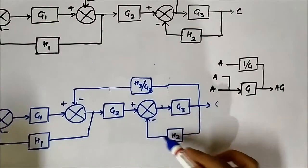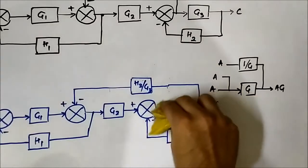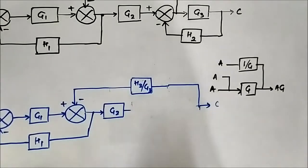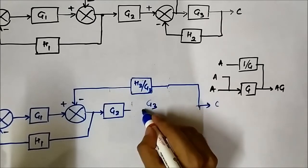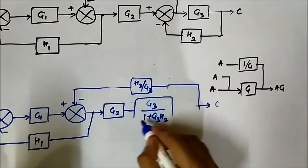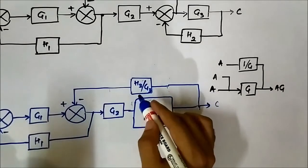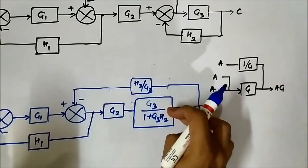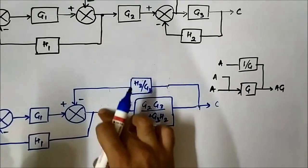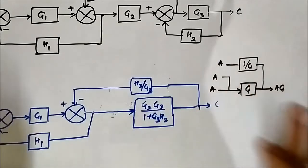This is a negative feedback path. It will become G3 / (1 + G3·H2). So directly we apply that formula: G3 / (1 + G3·H2). Again, these two blocks are in cascade with G2, so it becomes G2·G3 / (1 + G3·H2). Up to this point it is done.